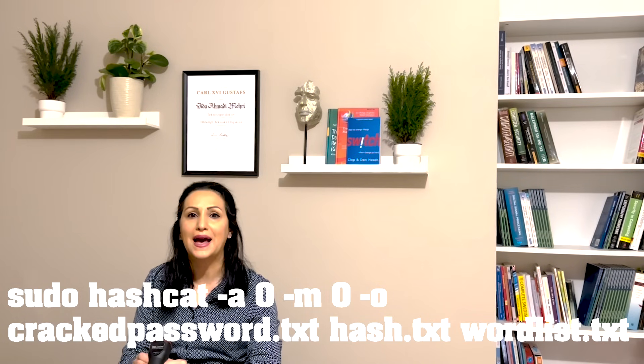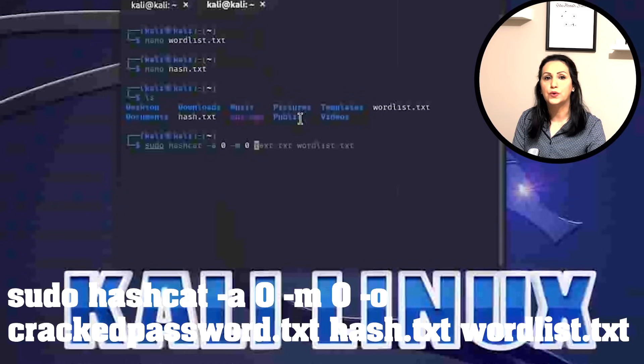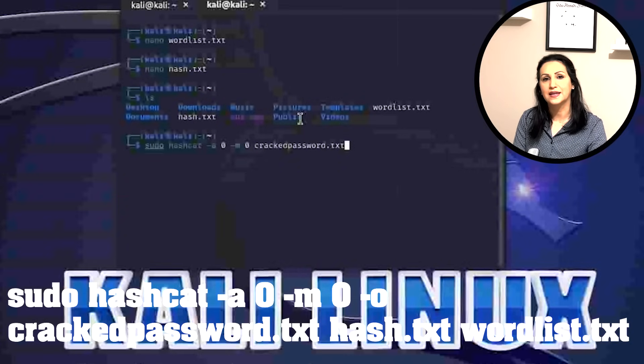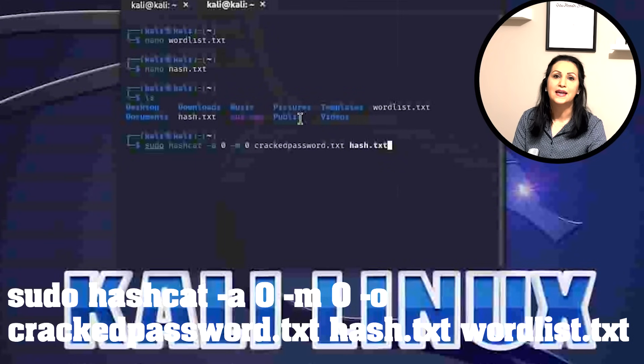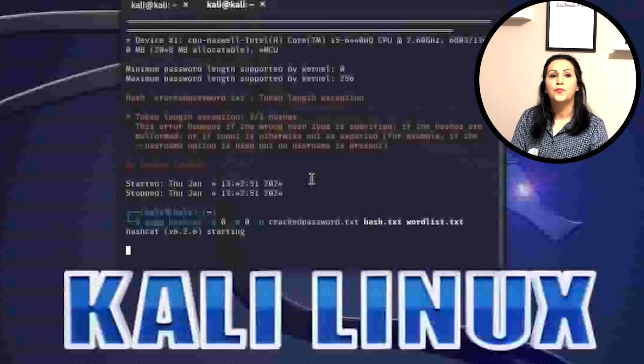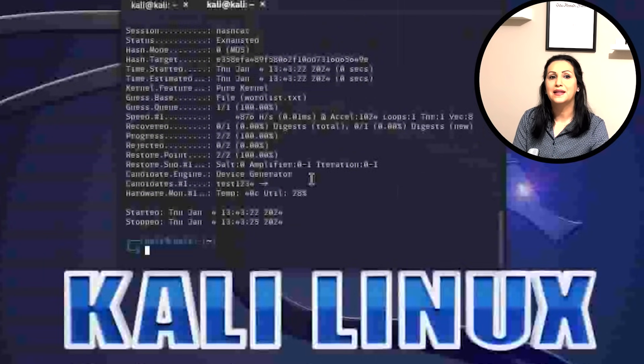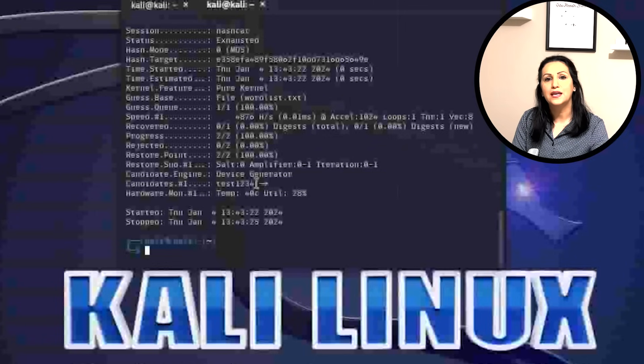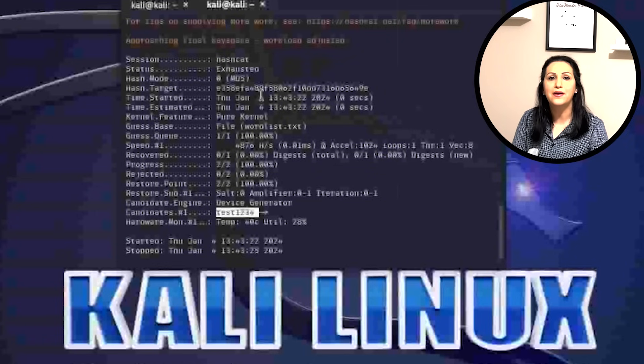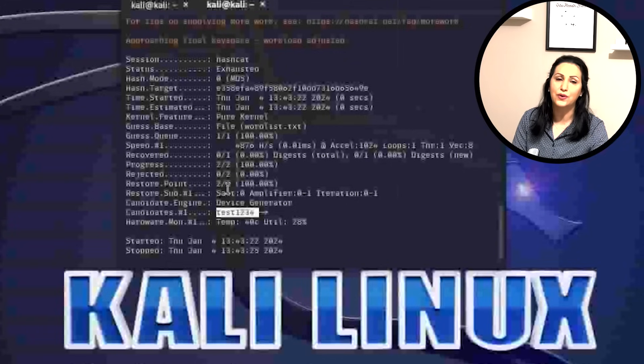I want every found password to be stored on cracked_password.txt, and then I passed my hash file hash.txt and then the list of words wordlist.txt. What will happen by this command is Hashcat calculates the hash for each item in wordlist and compares it with the hash values in file hash.txt. The matches will be saved in cracked_password.txt file.